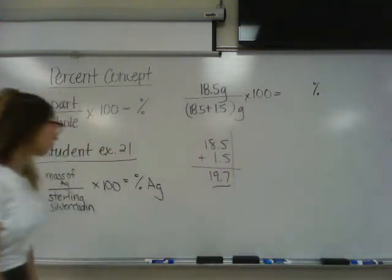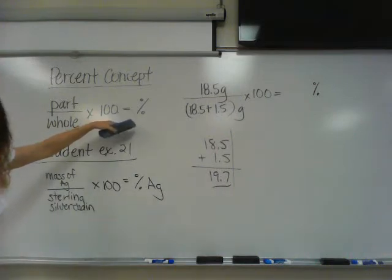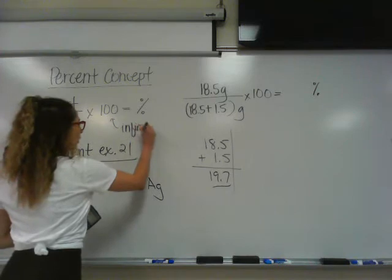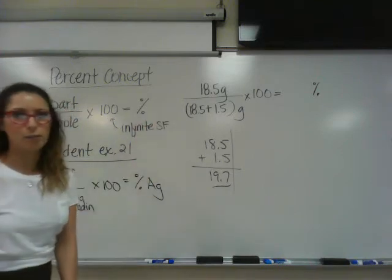18.5 plus 1.5 is 20.0. That's 3 sig figs. And then we're going to multiply by 100 and that's going to give you your percent of silver. Now, remember, the 100 is a part of the equation before you put your numbers into it. So doesn't that mean it's exact? So how many sig figs does it have? Infinite. So it will not affect the sig figs in my final answer.